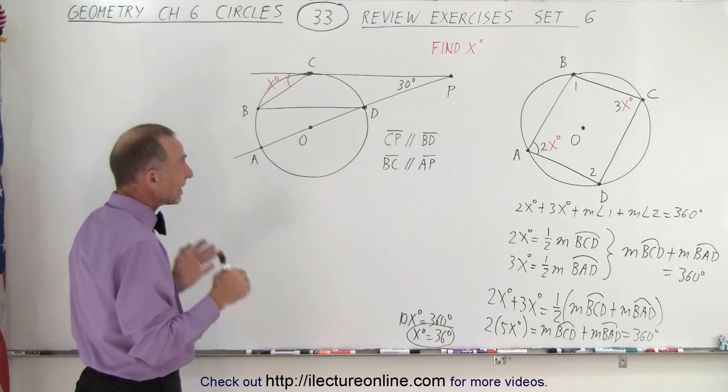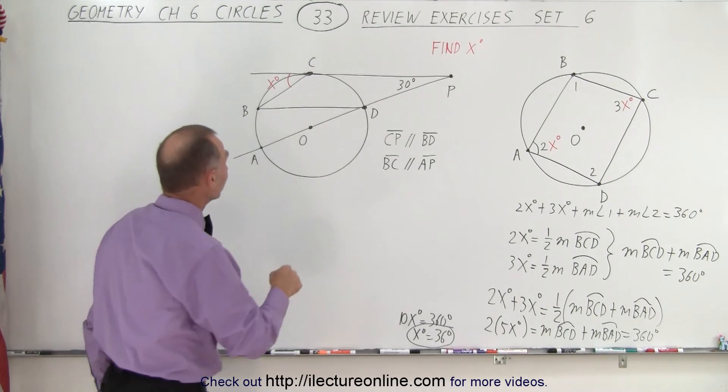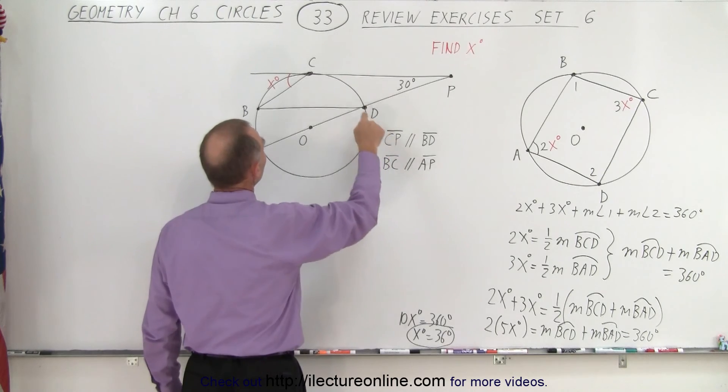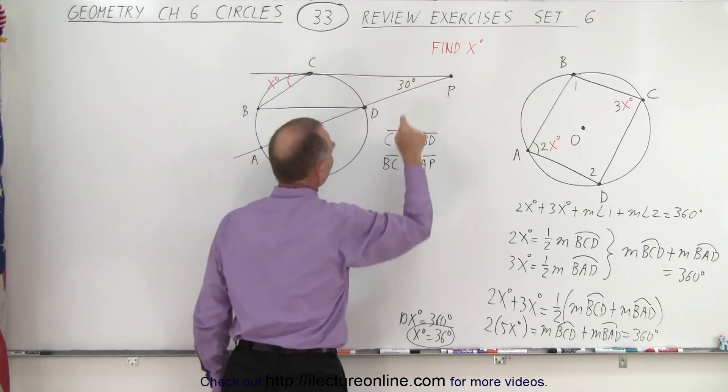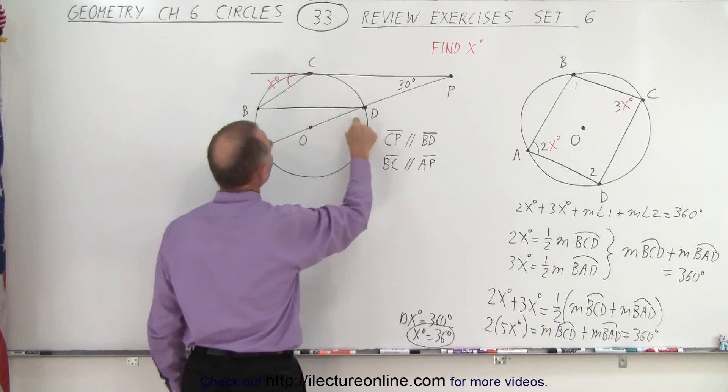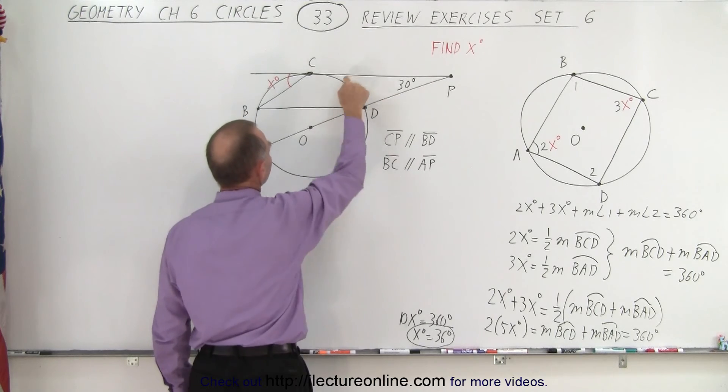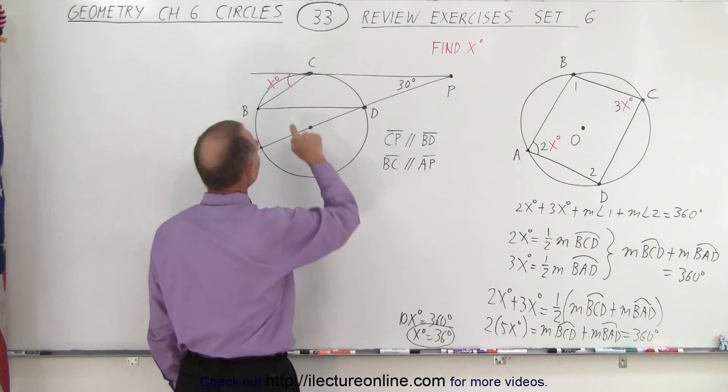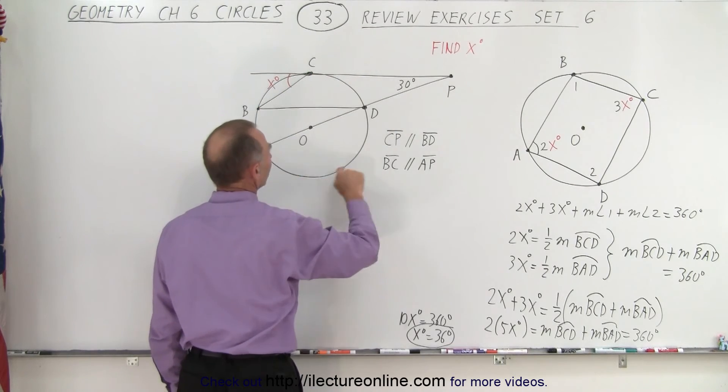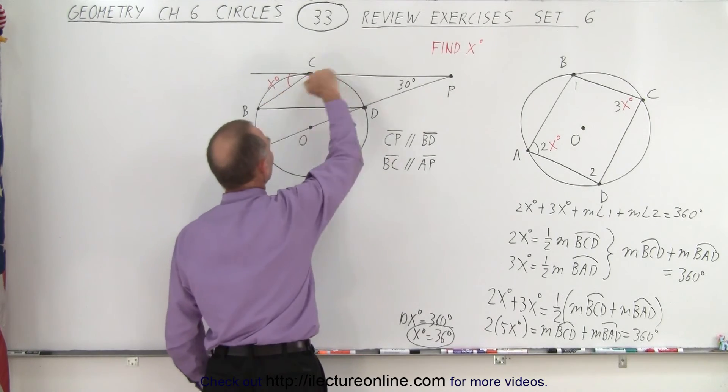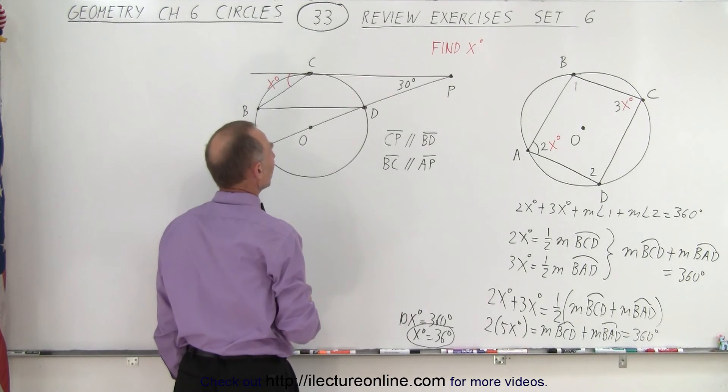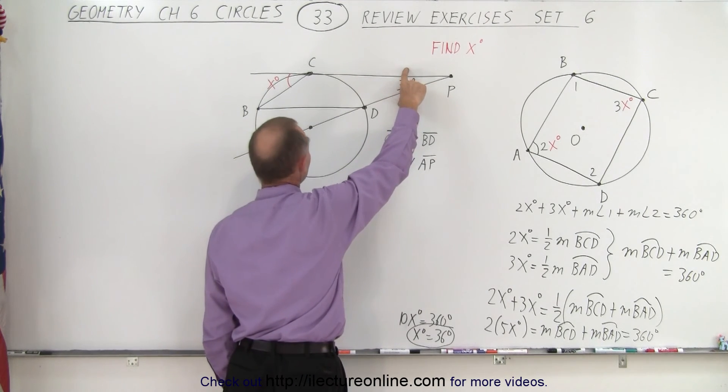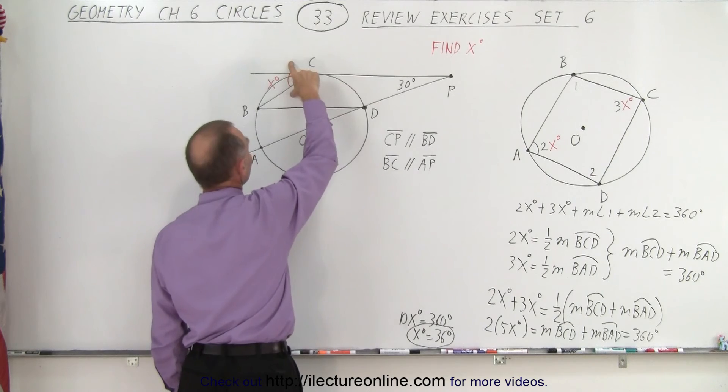The second one is actually fairly easy if you see it. They do tell us that the line from C to P is parallel to the line from B to D. So these two lines are parallel to one another. We're also told that the line from B to C is parallel to the line from A to P. So these two lines are parallel to one another.